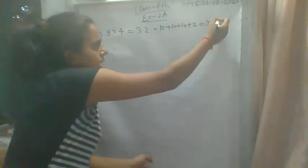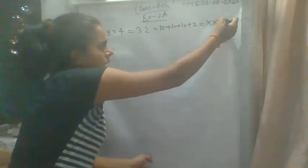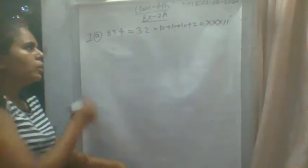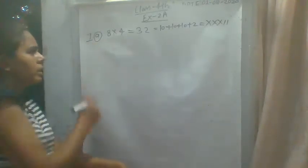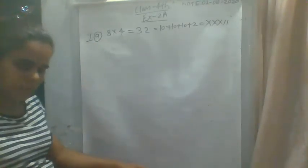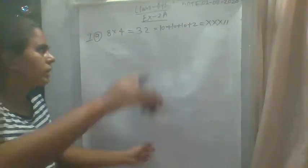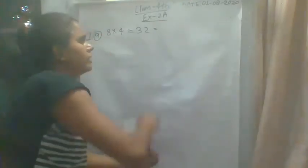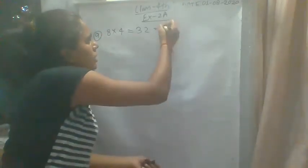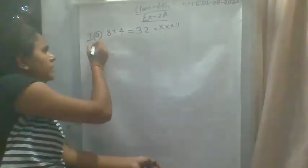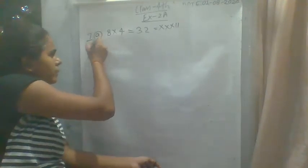X, X, X, I, I. So 32 is written as XXXII. Then B: 81 divided by 9. 9 is written as IX. Then 12 plus 12 equals 24, so we have 24.